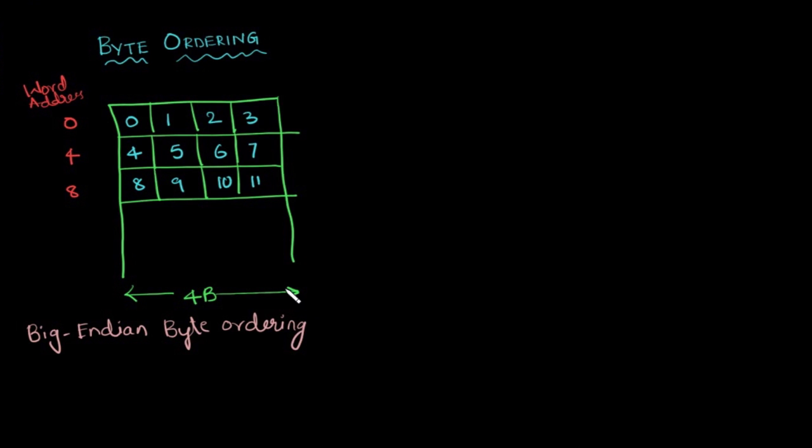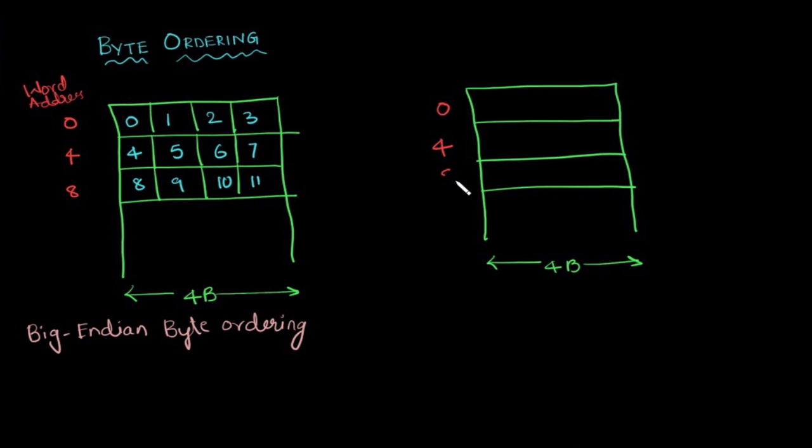There is another scheme where the bytes are stored in the reverse order. Let us consider this memory. Let's say this is a memory consisting of several words and each word is of same size that is 4 bytes. The word address of first byte starts at 0, second at 4, third at 8. The word addresses are same in both orderings. Now let's see the byte ordering.